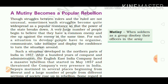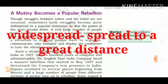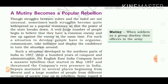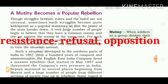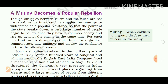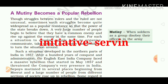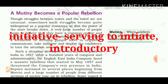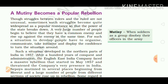Our first topic is 'A Mutiny Becomes a Popular Rebellion.' Struggles between rulers and the ruled are not unusual. Sometimes such struggles become quite widespread as popular resistance, so that the power of the state breaks down. A very large number of people begin to believe that they have a common enemy and rise up against that enemy. For such a situation to develop, people have to organize, communicate, take initiative, and display the confidence to turn the situation around. Such a situation developed in the northern parts of India in 1857.